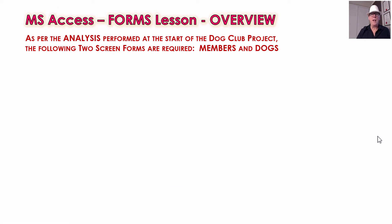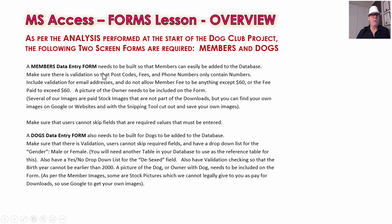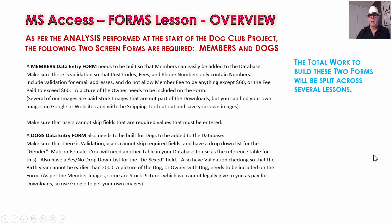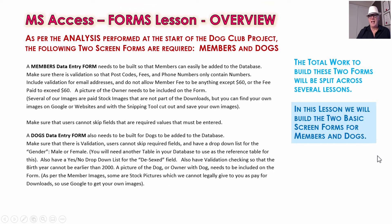As per the analysis document we did at the start of the dog club, you always sit down with the client and work out what they would like and need, talk about their business, and maybe suggest things they hadn't thought about. We came up with two forms: one for the members and one as a dog's data entry form. So there are two forms we're going to build in this lesson, and they come straight from the analysis document. It's going to be split across several lessons because we won't put drop-down lists in today and won't put images, but about 80–90% of the work on the form is going to be done in this lesson.